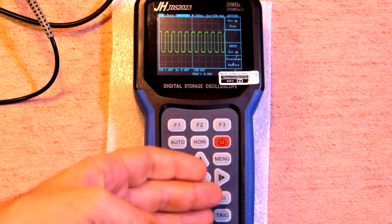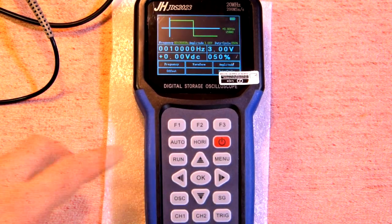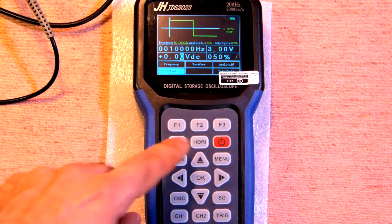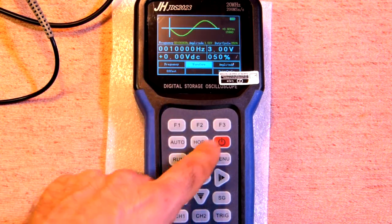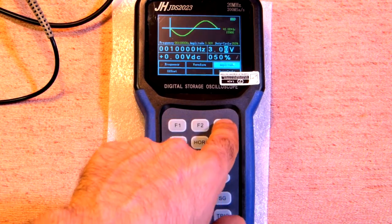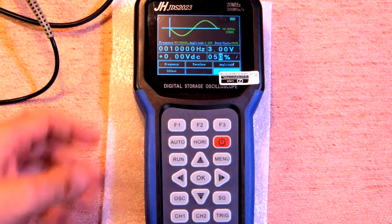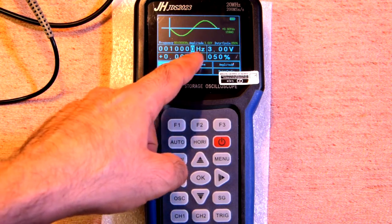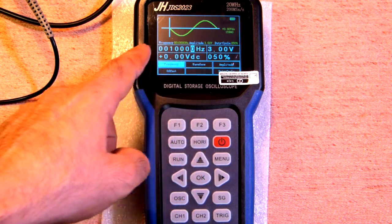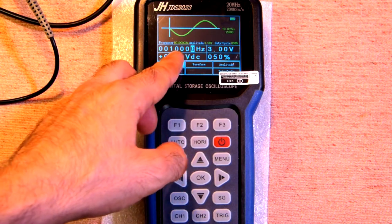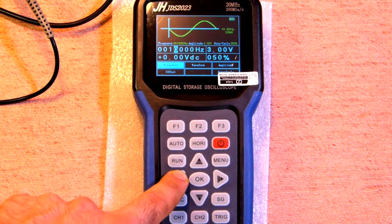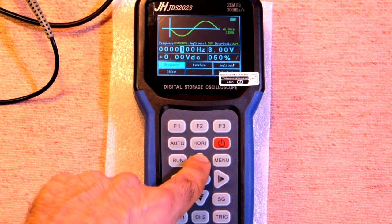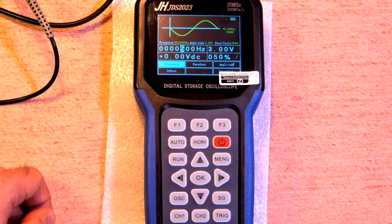And now let's check the signal generator. F1 is frequency and the second pressing is offset. F2 is waveform. F3 is amplitude and once again is duty cycle. Let's adjust the frequency, here in frequency mode we can change all the digits here. For example, let's adjust 500 Hz to 0 then to 5 and let it be sine wave.